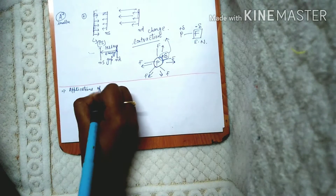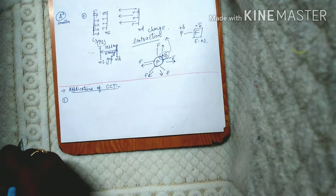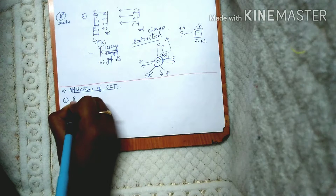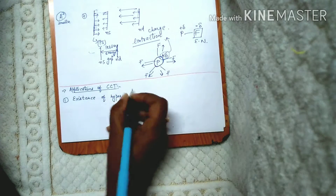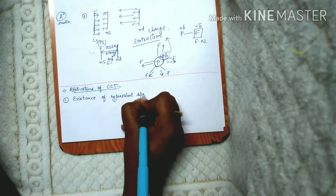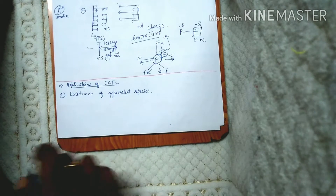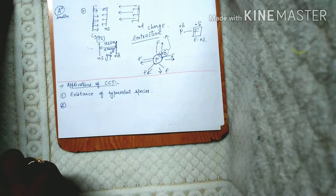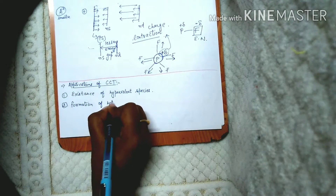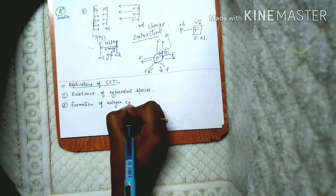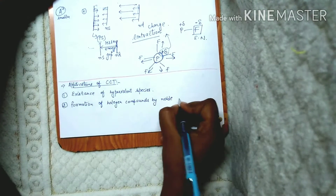The applications of charge contraction theory: the first application is the existence of hypervalent species. If you don't know about hypervalent species, we are going to study about it in this video. The next application is the formation of halogen compounds by noble atoms.